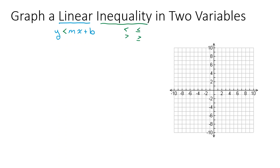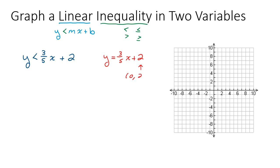So how do we graph the solutions to that? Let's look at an example. Let's say we have the linear inequality y is less than 3/5x plus 2. If we had the equation y equals 3/5x plus 2, we know all the solutions to that equation are going to lie on a line. I'm going to graph it by slope and y-intercept. The y-intercept is 2, so when x is 0, y is 2. The slope is 3/5, so from the point (0, 2) I go up 3 over 5, make a point, and connect them to graph the line.